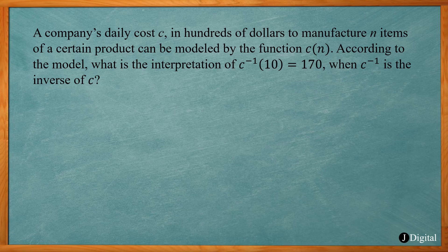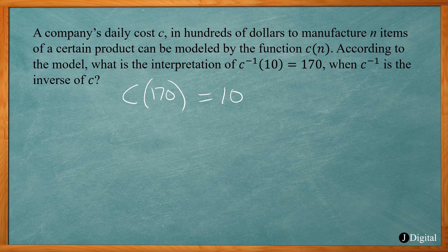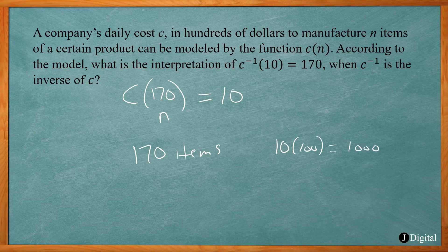This problem says a company's daily cost C in hundreds of dollars to manufacture N items can be modeled by the function C of N. The question asks for the interpretation of the inverse function C inverse of 10 equals 170. We can rewrite this as C of 170 equals 10. So N corresponds to 170 items, and the cost is 10 hundreds of dollars, which is $1,000. The interpretation is: the company's daily cost to manufacture 170 items of the product is $1,000.